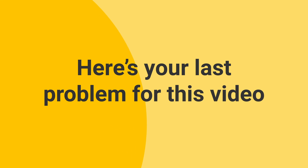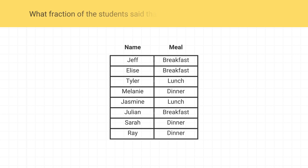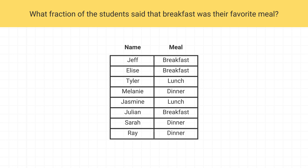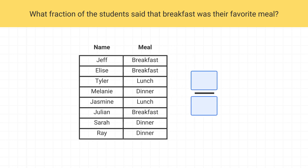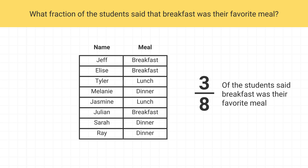Now here's your last problem for this video. Some students were asked what their favorite meal of the day was. These were their responses. What fraction of the students said breakfast was their favorite meal? The numerator is the number of students that picked breakfast as their favorite. We can see that three students picked breakfast as their favorite, so our numerator is three. The denominator will be the total number of students. We can count eight total students, so our denominator is eight. Three-eighths of the students said breakfast was their favorite meal.